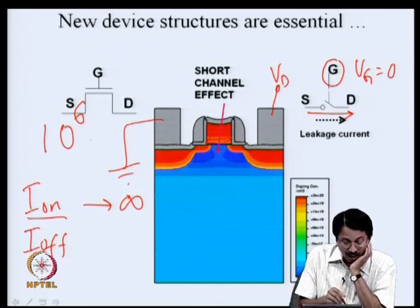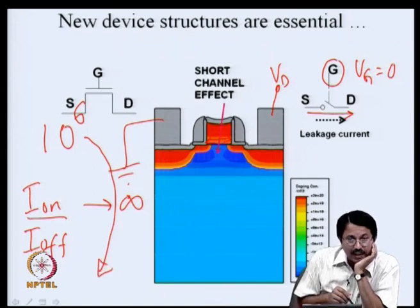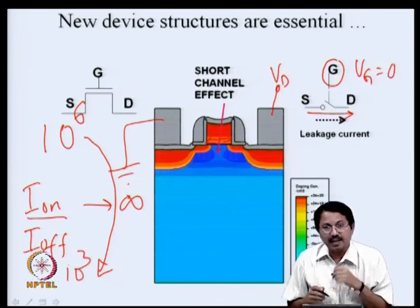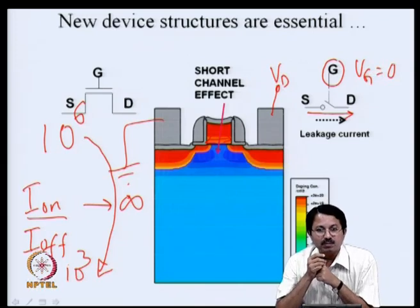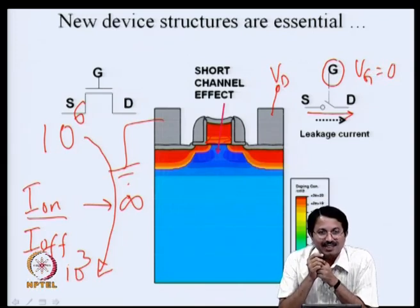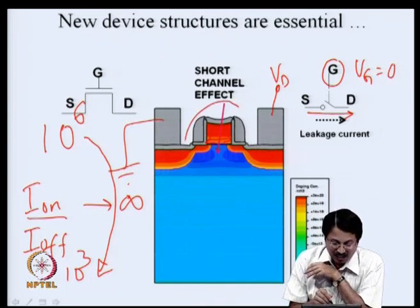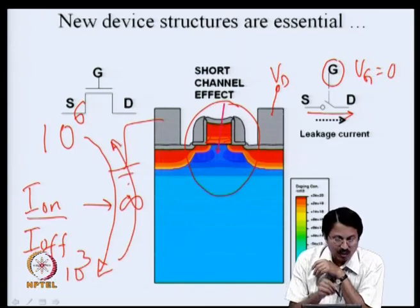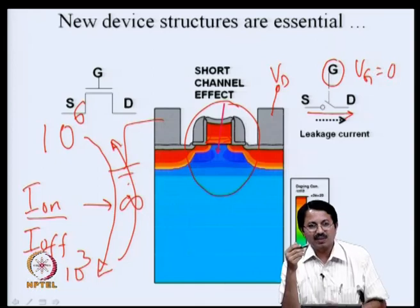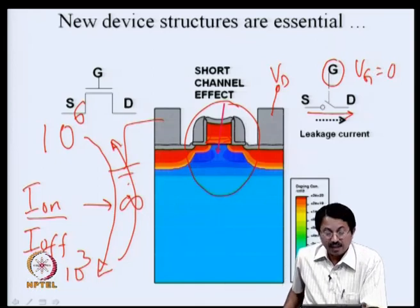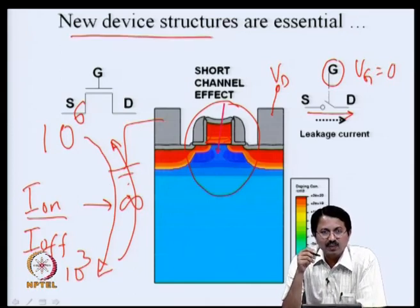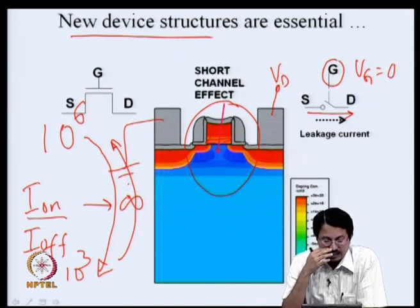But now this ratio has started coming down — it could come down as low as 10^3 or even less. If your ON current is only 100 times greater than your OFF current, that is not a very good abstraction of a switch. We need to do something to this transistor structure to bring the ION/IOFF ratio back to a reasonable number like 10^4 or 10^5, which can only be done by using new device structures.